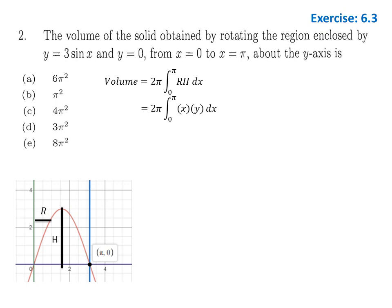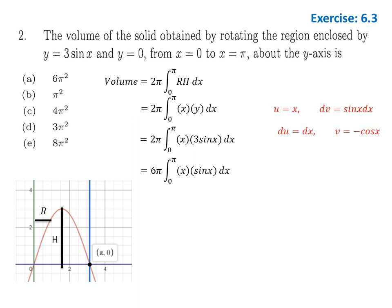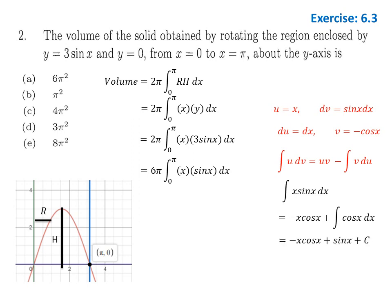The formula takes the form 2π ∫ x·y dx, but since y = 3·sin(x) we substitute to get the integral in terms of x. This is solved by integration by parts: let u = x and dv = sin(x) dx. Differentiating u gives du, integrating dv gives v = −cos(x). Plugging into the IBP formula and integrating cos(x) gives sin(x).